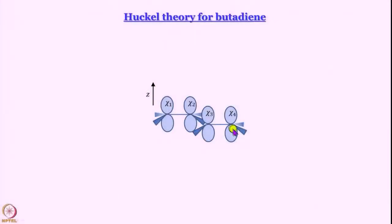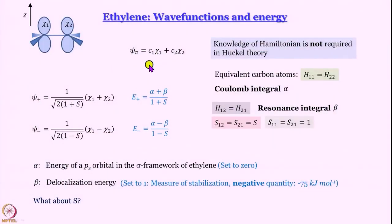Butadiene is a little more complicated than ethylene — you can think of it as two ethylene moieties joined together. We will see how we can build a Huckel theoretical description of a molecule like this. As a small recap, in ethylene we have worked out wave functions and energy, expressing the pi molecular orbital as a linear combination of the 2p orbitals on the 2 carbon atoms.